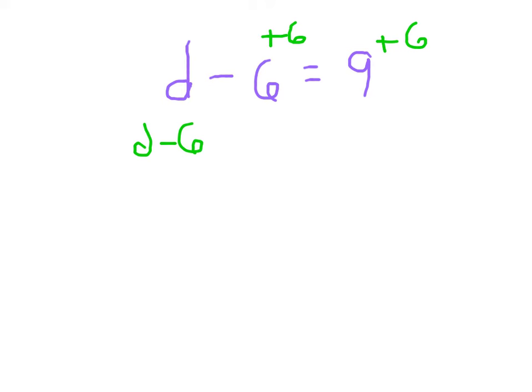Writing it out the same way that I had written it out before. I'll write it out there. Minus 6 plus 6. Basically, I'm just doing a 0 there. That's D.